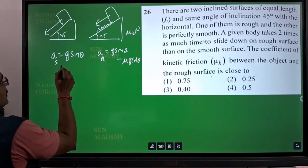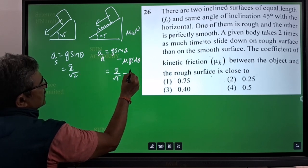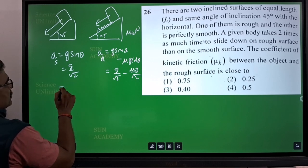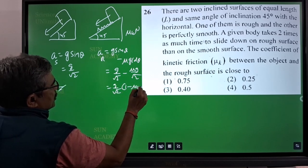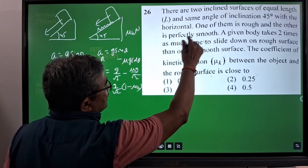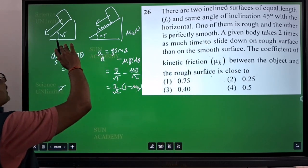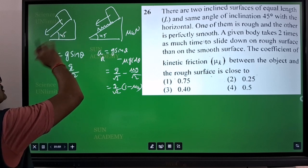If you substitute 45, it will be g by root 2 and this will be g by root 2 minus μ g by root 2, or if you take common g by root 2, it is equal to 1 minus μk. These are the expressions for accelerations. But from the question it is clear that the sliding times are related like the time of sliding about rough surface is double than the time of sliding on smooth surface.